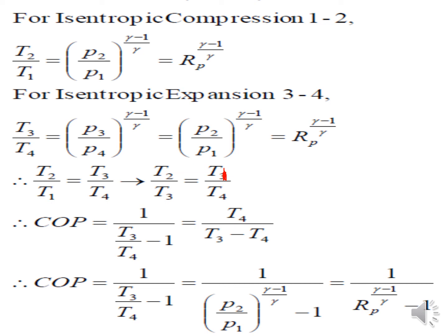T3 by T4 will get cancelled. This equation can be written as T3 by T4 equals RP raise to gamma minus 1 by gamma. The final equation is 1 divided by RP raise to gamma minus 1 by gamma minus 1. This is the final COP of Bell-Coleman refrigeration cycle. Next we will continue in the next video. Thank you.